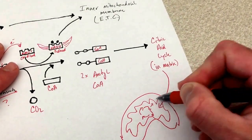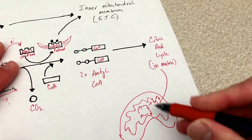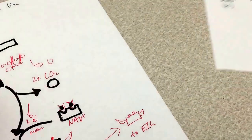From the citric acid cycle, these guys are going to drop off their electrons at proteins that are embedded in this inner mitochondrial membrane.